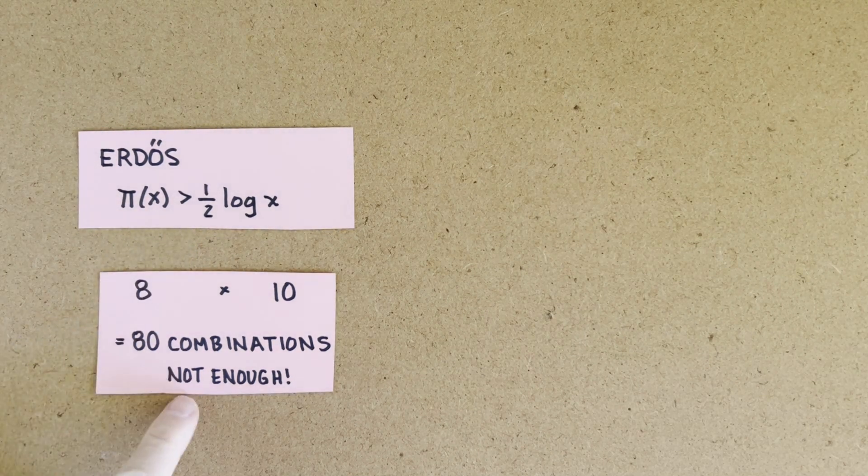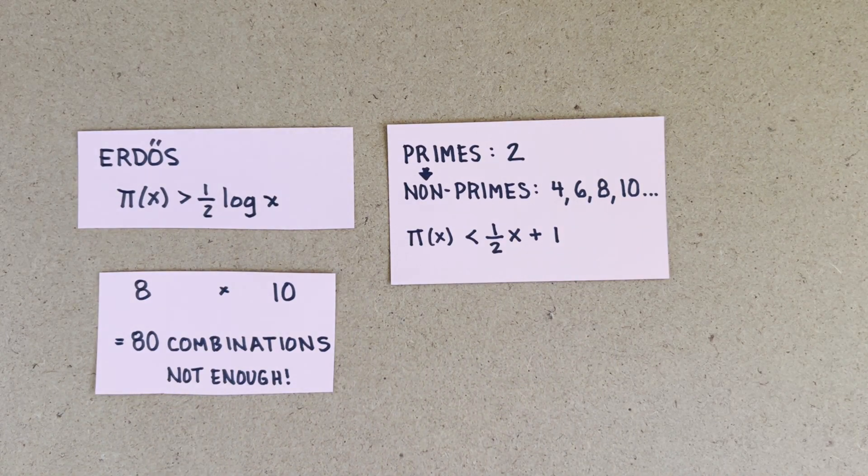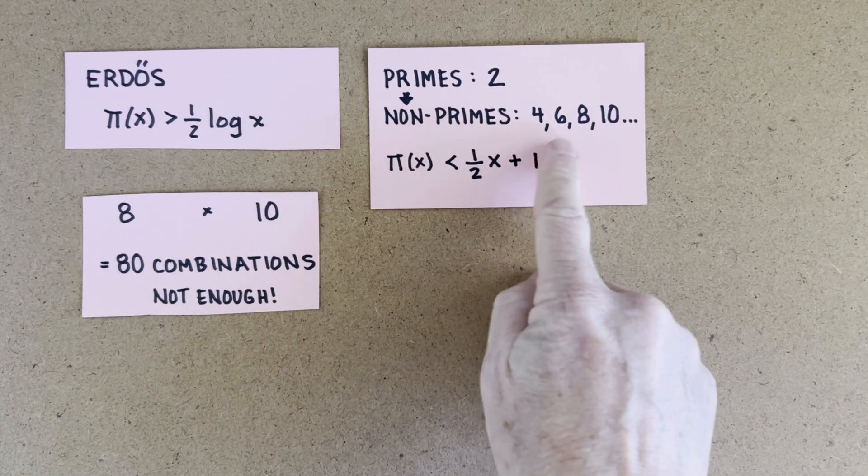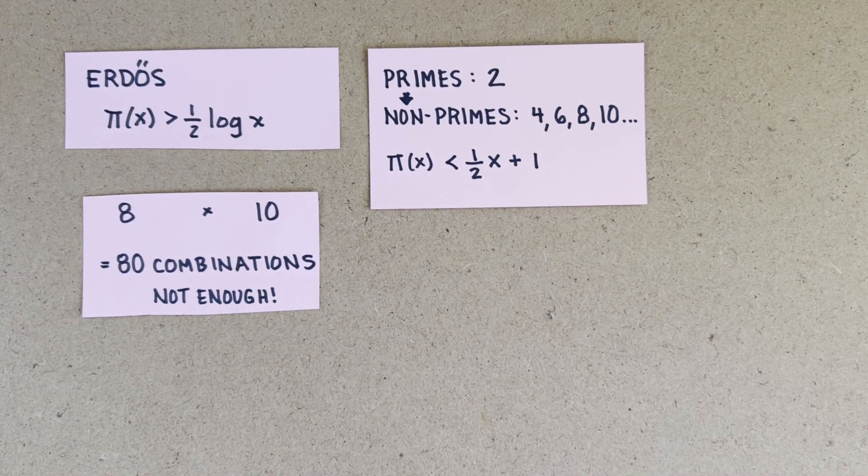The lesson from Erdős is that you need enough primes to be able to construct the non-primes. But the primes can't be too numerous because each prime brings with it a boatload of non-primes. For example, once we say 2 is a prime, that means 4, 6, 8, 10, etc. are not primes.